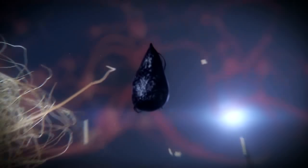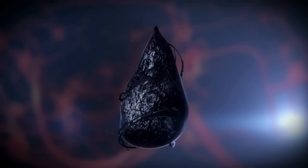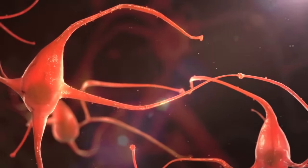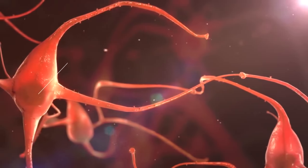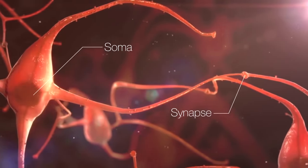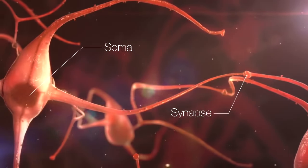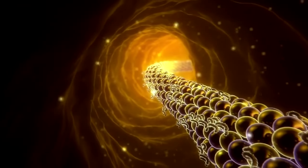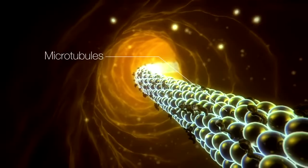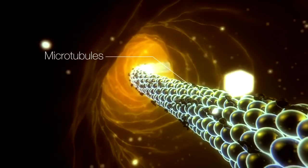How are neurofibrillary tangles formed? When a neuron communicates with another, a signal goes from the body, known as soma, to the synapse to transfer the information. The signal passes through the skeleton of the neuron composed of microtubules. These microtubules are stabilized by normal tau protein.